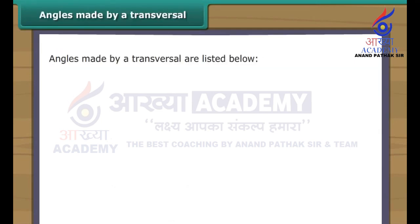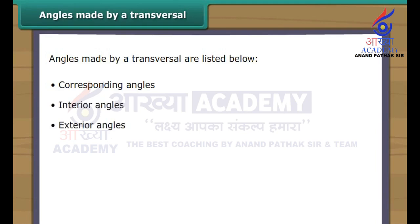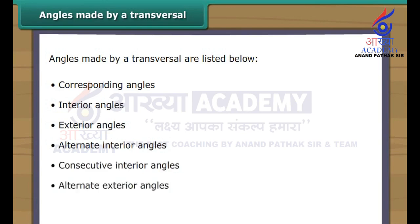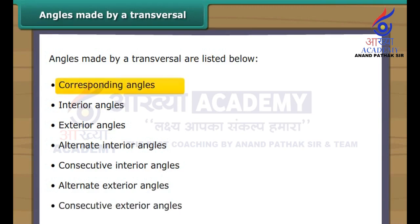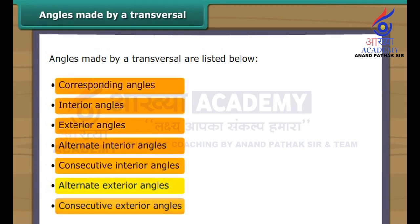Angles made by a transversal: Transversals form seven types of angles. They are described as corresponding angles, interior angles, exterior angles, alternate interior angles, consecutive interior angles, alternate exterior angles, and consecutive exterior angles. Click each button to know more about the above-mentioned angles.